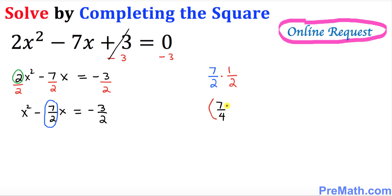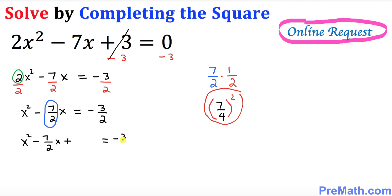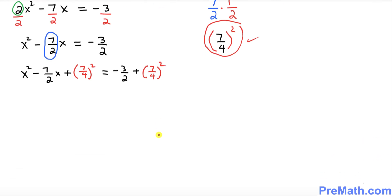Whatever you got, you must square it. So we're going to add this quantity — 7 over 4 squared — to both sides of the equation. That gives us X squared minus 7 over 2 X plus 7 over 4 squared equals negative 3 over 2 plus 7 over 4 squared.